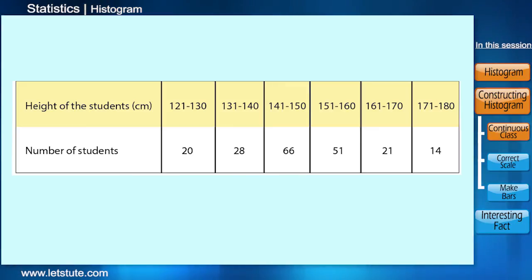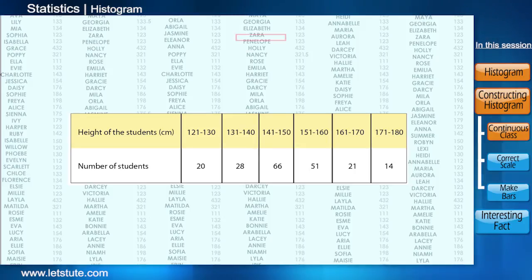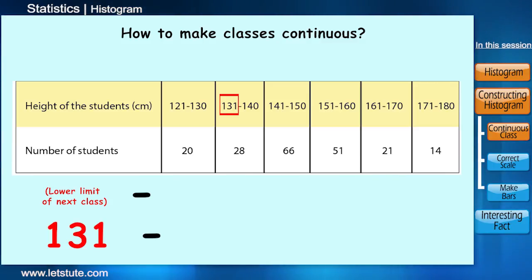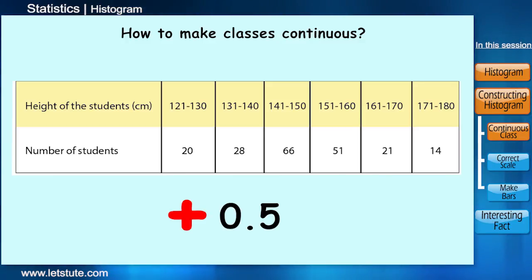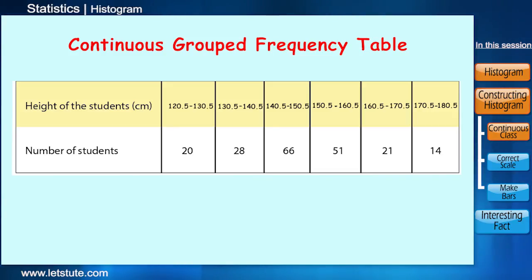Now here if we have the height of a student as 130.5 or 150.5, where will you plot these points? This is one of the most important reasons to make the classes continuous so that we cover all the data that we have received. Now how do we do that? First we take the difference between the lower limit of the next class, that is 131, and the upper limit of the previous class, that is 130, which comes to 1. Now we take half of the difference which comes to 1 by 2 or 0.5. Now we add this difference in the upper limits and we subtract this difference from the lower limits.